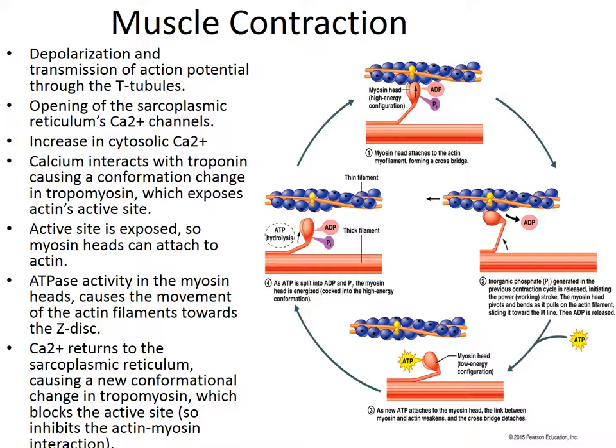Once the active site is exposed, the high-energy myosin heads attach to the actin for crossbridge formation. The release of ADP plus phosphate from the high-energy myosin head causes the head to pivot and bend as it pulls on the actin filament, sliding it towards the midline. This is called the power stroke and is equivalent to the contraction of the muscle. As a new ATP attaches to the now low-energy myosin head, the myosin head detaches from the actin. ATP is split to form ADP plus phosphate, and the bond energy is transferred to the myosin head, causing it to move to the high-energy position — generally referred to as cocked or reactivated — so that it is ready to bind to the actin binding sites once again.